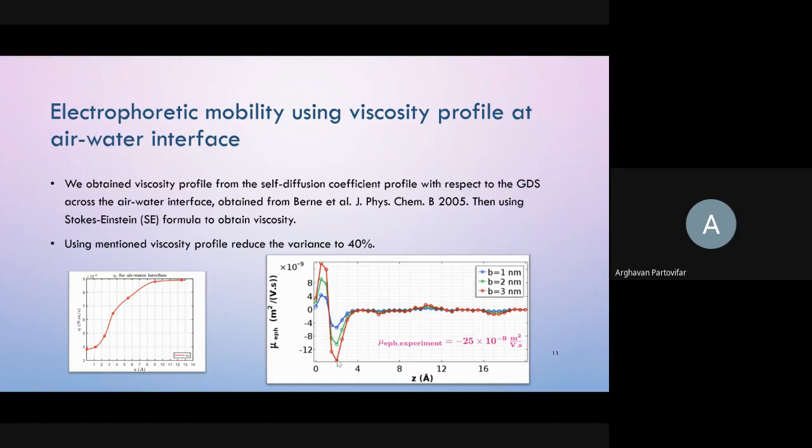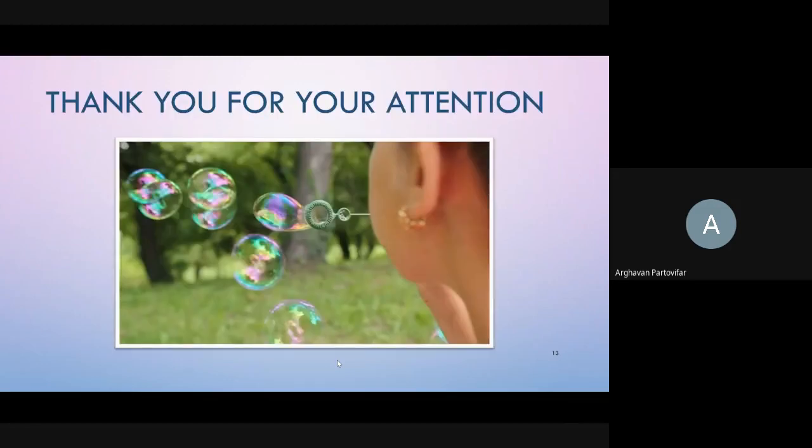However, this self-diffusion profile that we use for calculation of the viscosity profile is with respect to Gibbs dividing surface and it smears out the results and doesn't give accurate results. We want to progress our work by calculating the viscosity profile versus the instantaneous position of the surface to get more accurate results. Thank you for your attention.